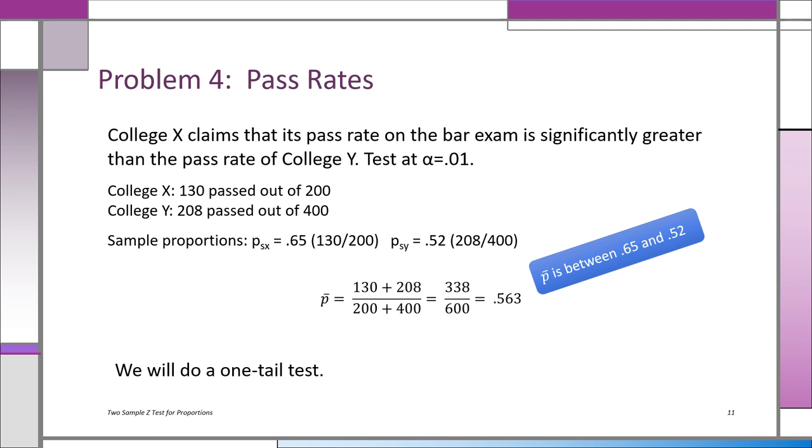Meanwhile, here's the data. In College X, 130 passed the test out of 200. In College Y, 208 passed out of 400. You see the two sample proportions there. pSX is 0.65—that's 130 over 200. The sample proportion of College Y is 0.52—that's 208 over 400.